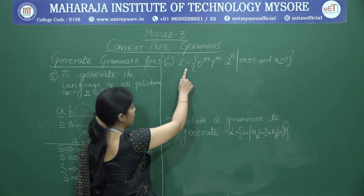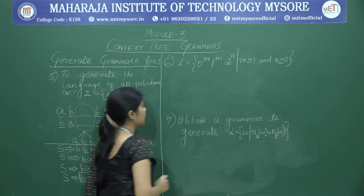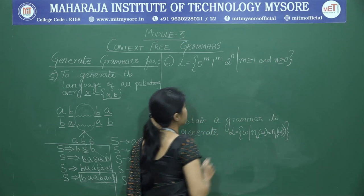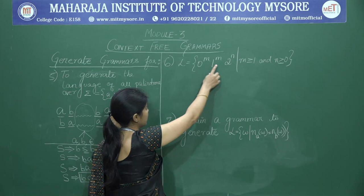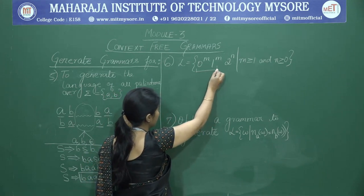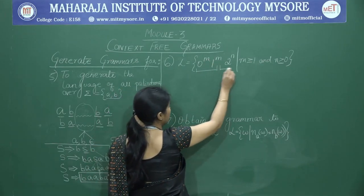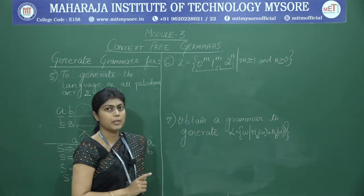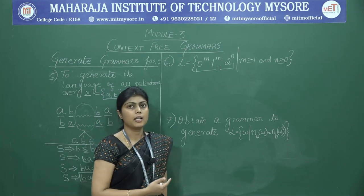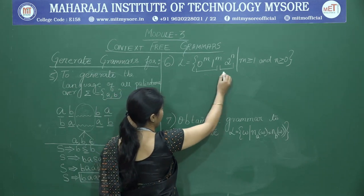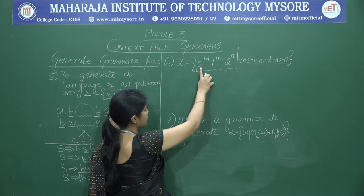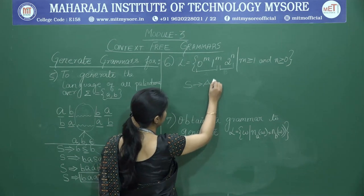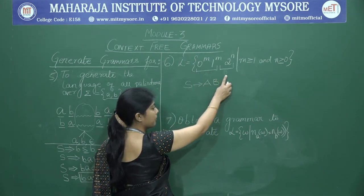Next problem: L = 0^m 1^m 2^n, where m ≥ 1 and n ≥ 0. We observe that 0 and 1 appear the same number of times (m), while 2 appears n times independently. So we use two variables: A to define occurrences of 0s and 1s, and B to define occurrences of 2s. We write S → AB.